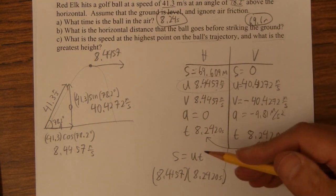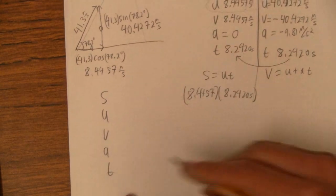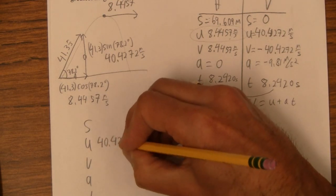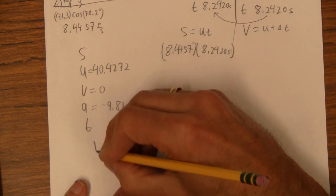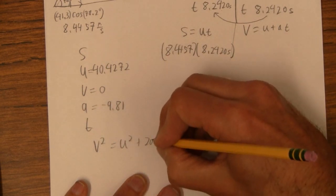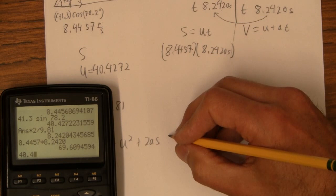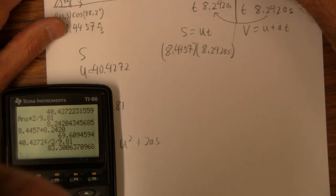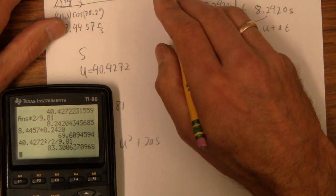Now, to figure out the highest height, the greatest height that it gets, we need to do another SUVAT. We'll just go from the ground to the top. I'm going to use the initial velocity to be this 40.4272. At the top, the velocity is zero, and the acceleration is negative 9.81, and I can use v-squared equals u-squared plus 2as to find the height. So let's do that 40.4272-squared divided by 2 divided by 9.81. I'm getting 83.3 meters as the greatest height. So at the top, it's moving 8.4 meters per second to the side, and it's 83.3 meters in the air.